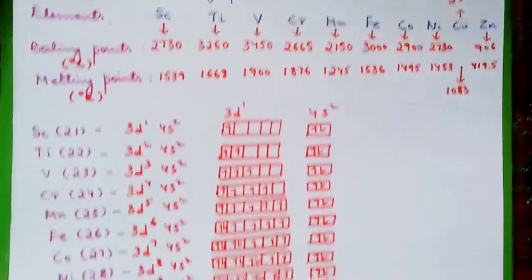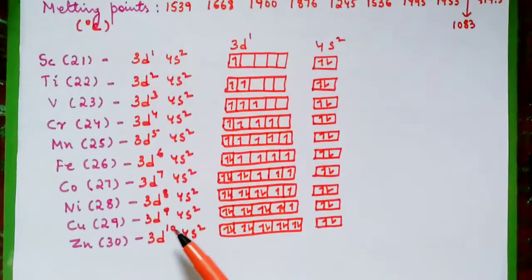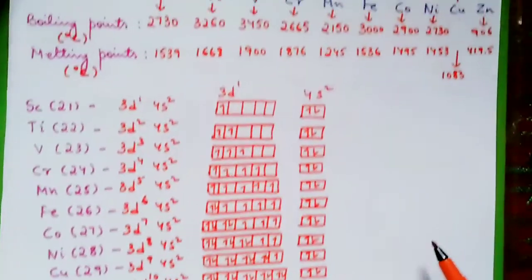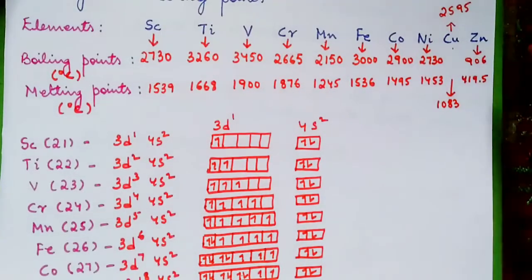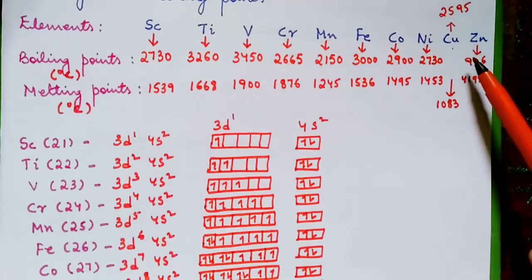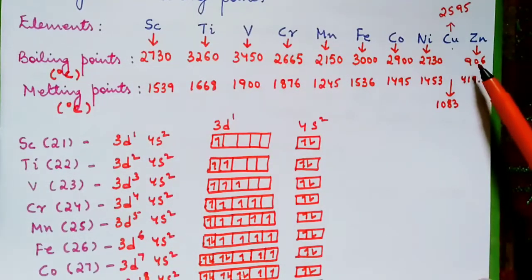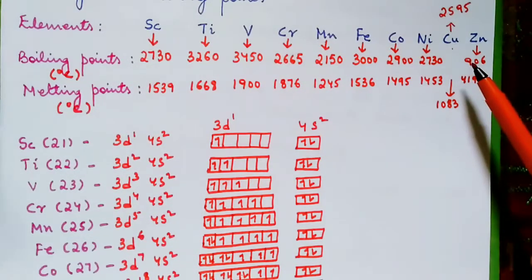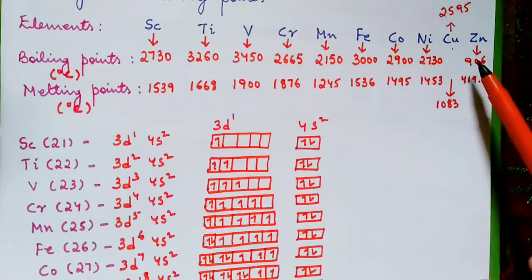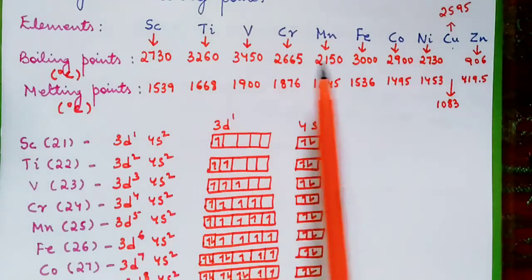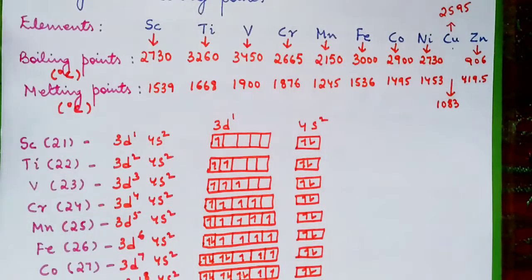Finally, for zinc, it has no unpaired electrons. That's why the boiling point is only 906 degrees Celsius — very low compared to the other elements in the 3D series.